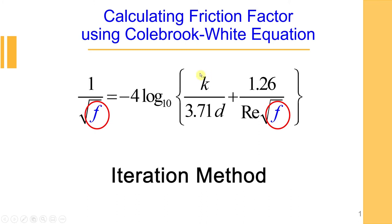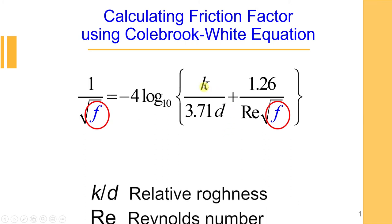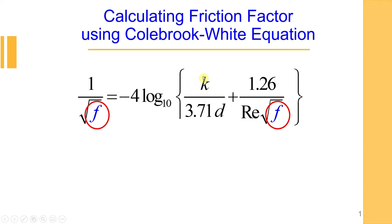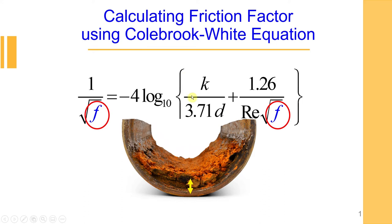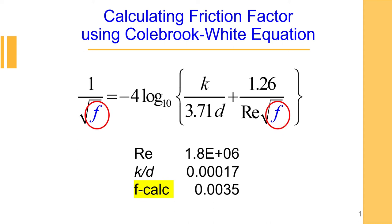Friction factor depends on relative roughness, which is defined as k divided by d, where k is the average size of roughness elements on internal side of the wall of the pipe and also Reynolds number. For example, if you use these parameters for Reynolds and relative roughness, you will estimate friction factor to be equal 0.0035.